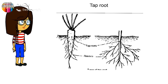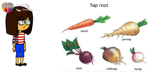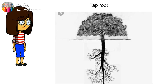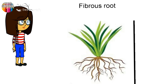Here are examples of vegetables with tap roots: carrot, turnip, and beet — all these vegetables have tap roots. Examples of trees with tap roots are oak, walnut, and conifers.